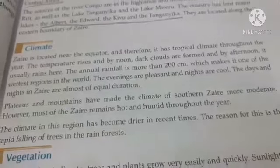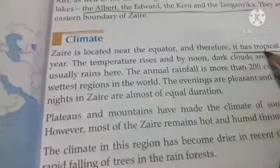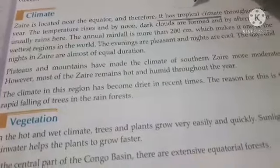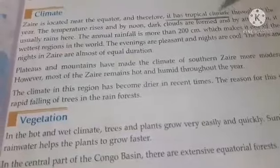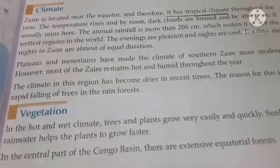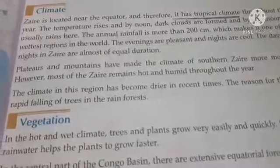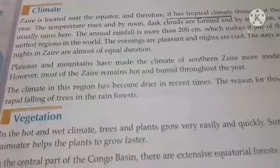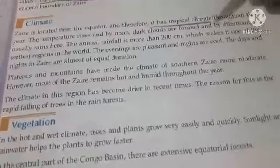Next we will discuss the climate of Zaire. Zaire is located near the equator and therefore it has a tropical climate throughout the year. The temperature rises by noon, and by afternoon dark clouds are formed and it usually rains in the afternoon.